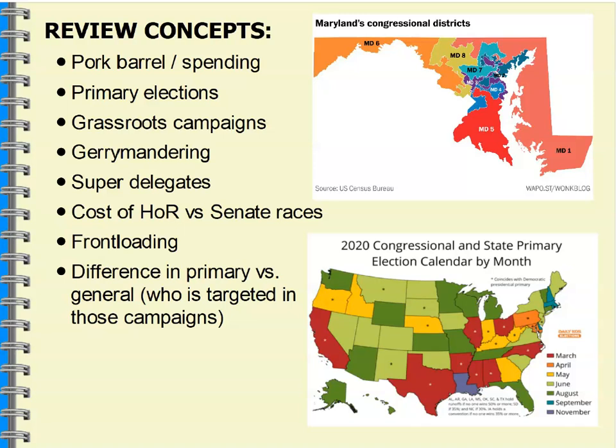Superdelegates: we see these in the primaries for Democratic presidential races. Superdelegates are elected officials, former elected officials, and celebrities who come to the convention and vote. This was set up as a result of the McGovern-Fraser Commission discussed in Chapter 7 — broadening the tent to appeal to more people working at the polls. It creates two tiers. Republicans do not have superdelegates; it's just the Democrats.